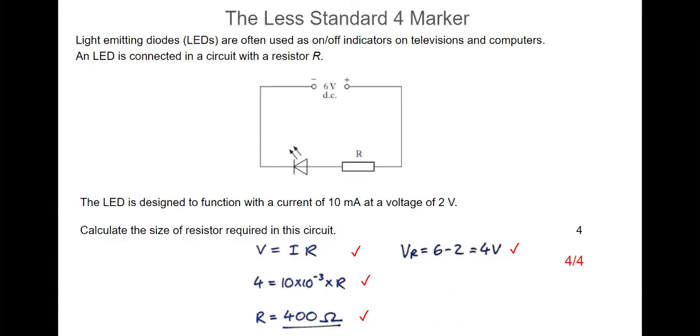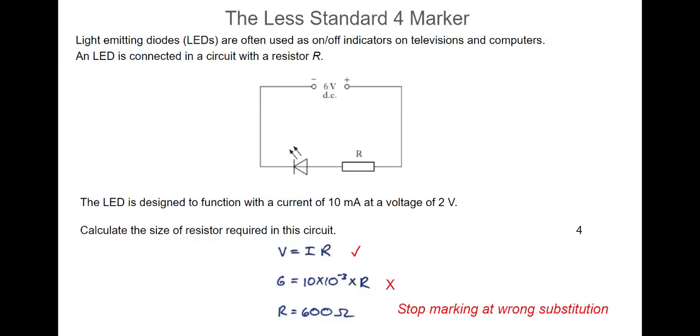Now, I found in my experience that people either get four out of four for this question, or they get one out of four. And they get one out of four because they do this. They forget to subtract the two volts from the six volts, and they go with either six volts as the voltage or two volts as the voltage to put into the formula. So they get the mark for the formula. Correct. But then they get the mark wrong for wrong substitution. Stop marking wrong substitution, one out of four.